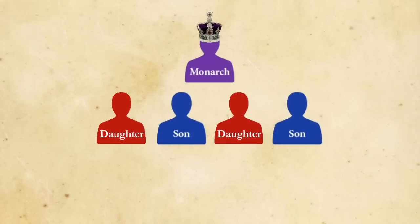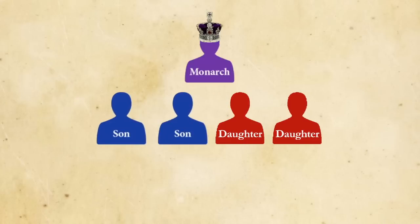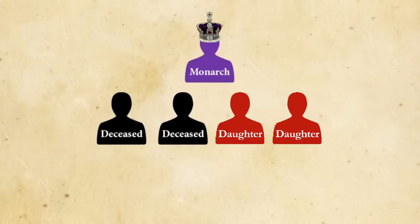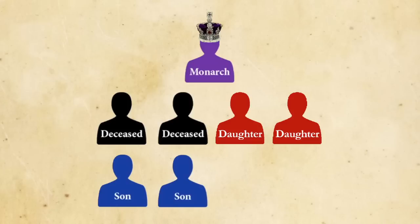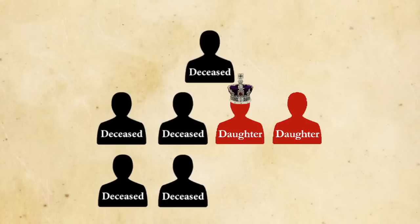Until recently, daughters were always in line of succession after all of their brothers, older or younger. They were only eligible to be queen if they had no living brothers, and if they had any deceased brothers, if those brothers had no living descendants. But since the crown must go to any possible children of the monarch before going back up a generation, a daughter of a king would be in line to the throne before her uncle, the king's brother.